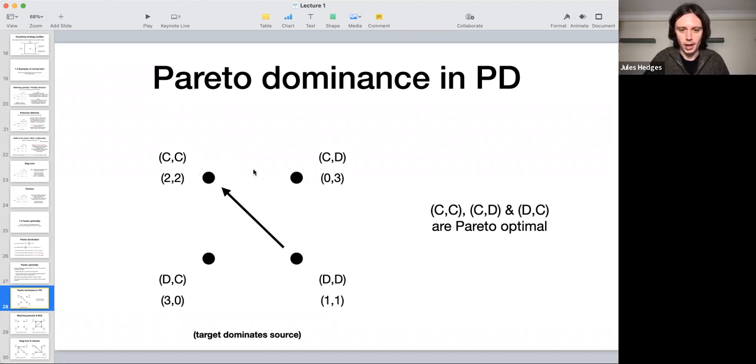On the other hand, there are no other pairs of strategy profiles here that have this relationship. So, for example, going from here to here, from DD to DC, makes things better for player one because you go from one to three, but you make things worse for player two because you go from one to zero. And you will find that if you try to check this relationship for any other pair, you'll find that this does not hold. So what does this mean? Well, it means that the profile DD is not Pareto optimal because it's Pareto dominated by CC. The other three pure strategy profiles are all Pareto optimal because they're not Pareto dominated by anything.